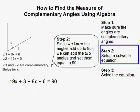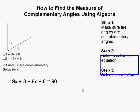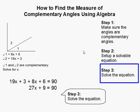The 19x plus 3, that comes from angle 2, and the 8x plus 6 comes from angle 1. Now we simply solve the equation.